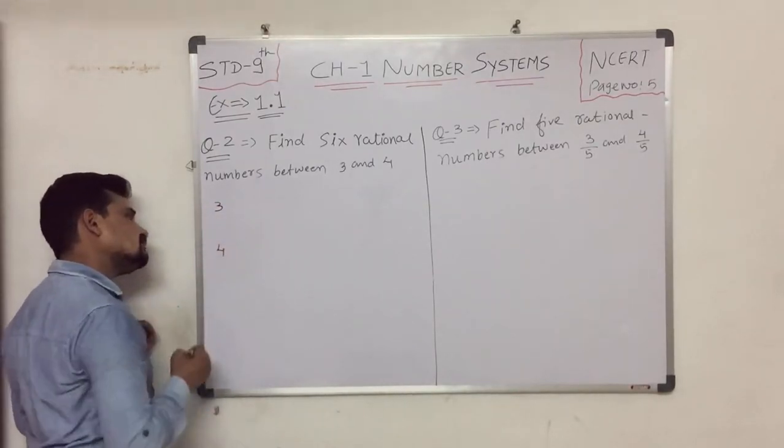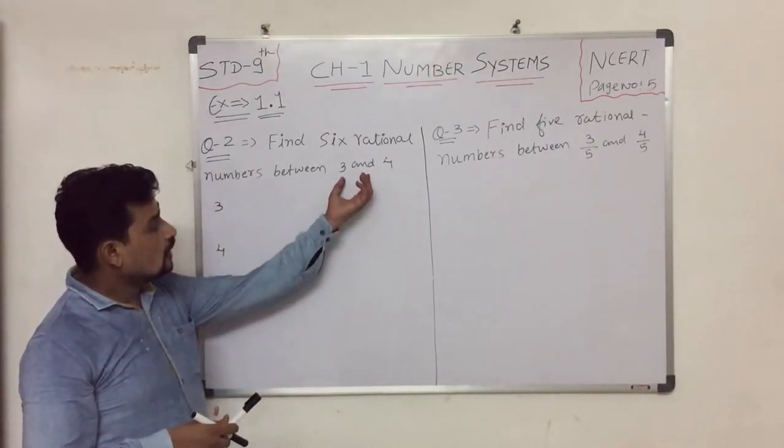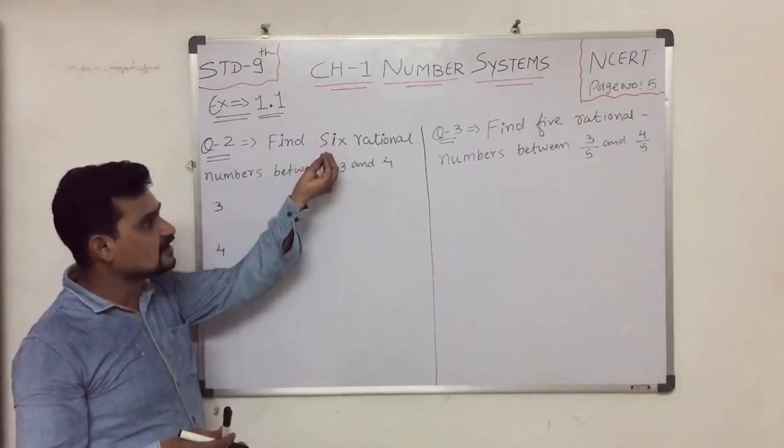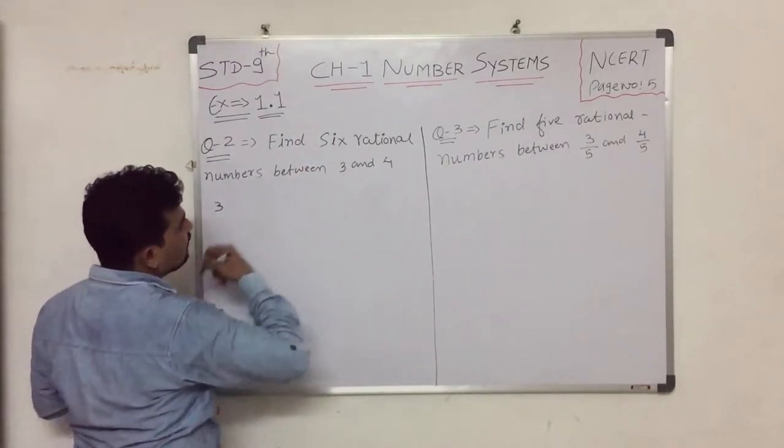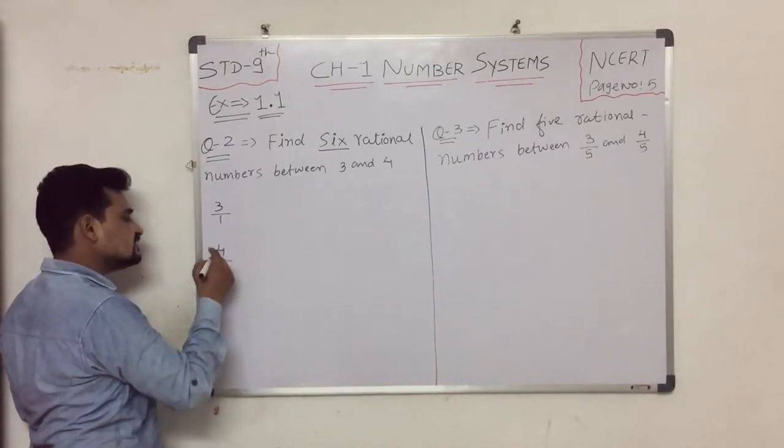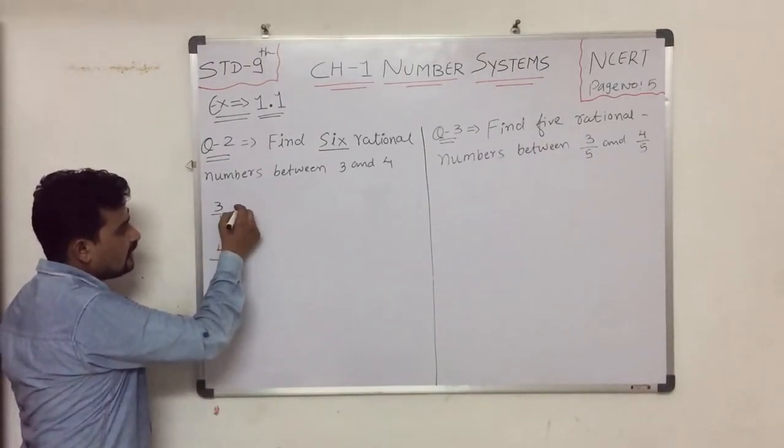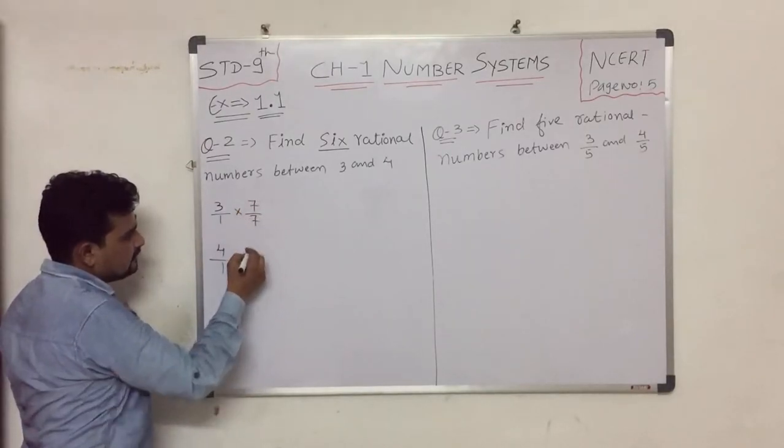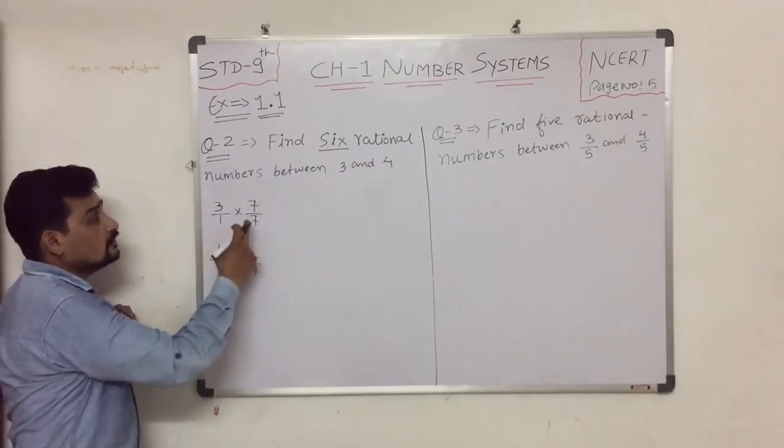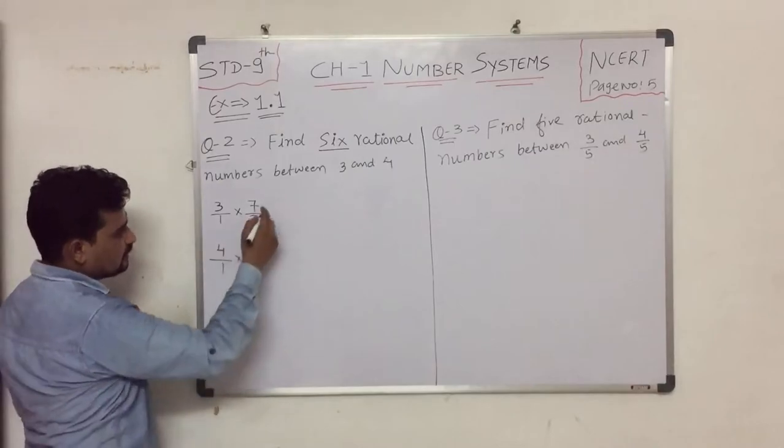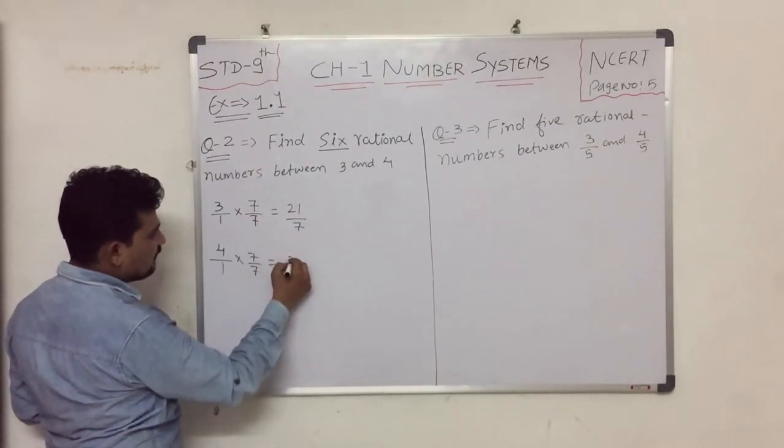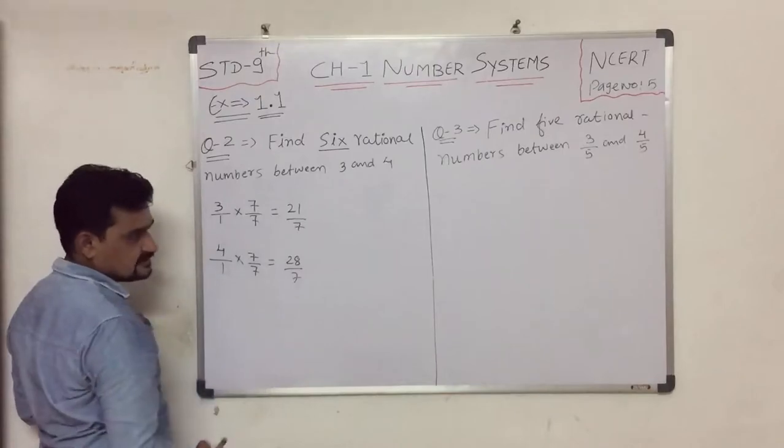To find 6 rational numbers between 3 and 4, we can multiply both the numerator and denominator by 7. When we multiply 3 by 7, we get 21, and when we multiply 4 by 7, we get 28. So we need to find numbers between 21/7 and 28/7.